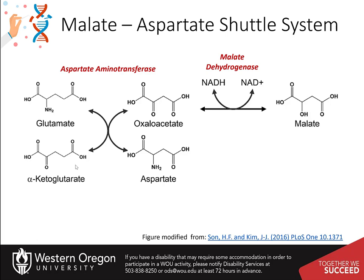In a different reaction using malate dehydrogenase, oxaloacetate can be reduced to malate using a molecule of NADH as the electron donor. When this happens in the cytosol, NADH can be recycled to oxidized NAD, and the resulting malate can be transported into the matrix of the mitochondria. Once in the mitochondria, malate can undergo oxidation in the last step of the Krebs cycle and produce oxaloacetate and one molecule of NADH.